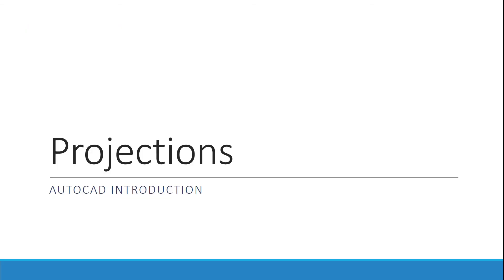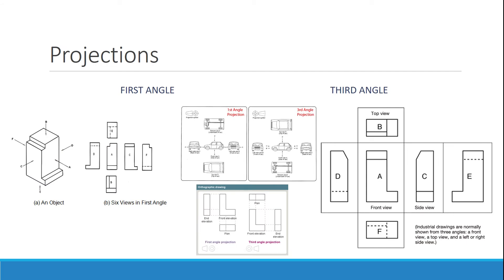AutoCAD is really big on projections. When you're creating certain objects, you want to make sure that you're creating them correctly according to whatever standard you're using. In different industries, we use different standards. In America, we use the third angle projection, which is super important for you to know. Most of the rest of the world, or the international standard, is going to be the first angle projection. We're going to look at projections in your fourth or fifth module.